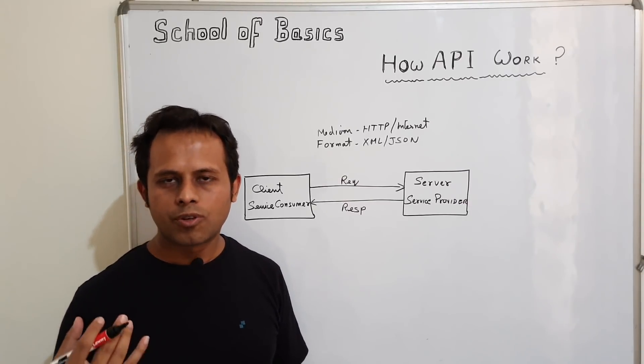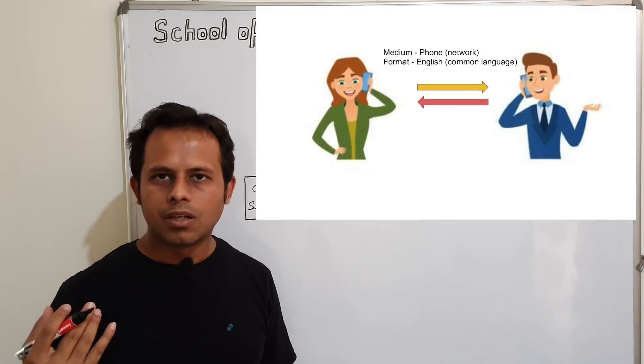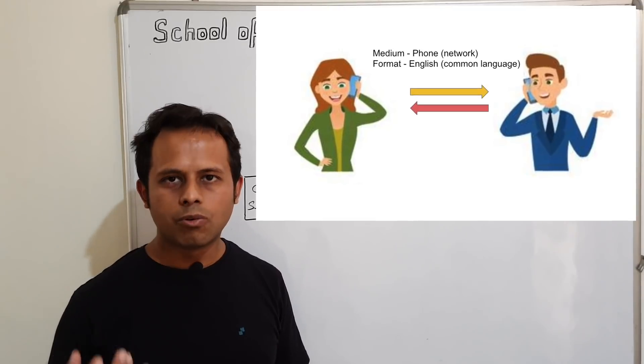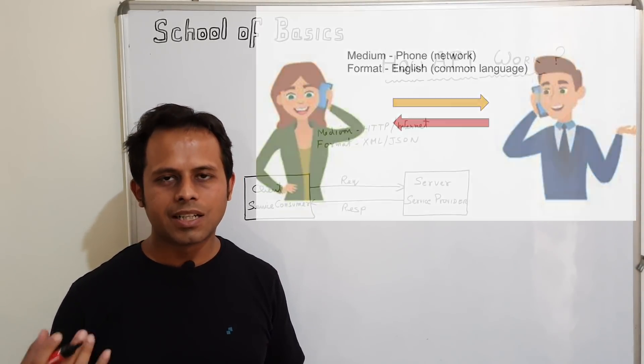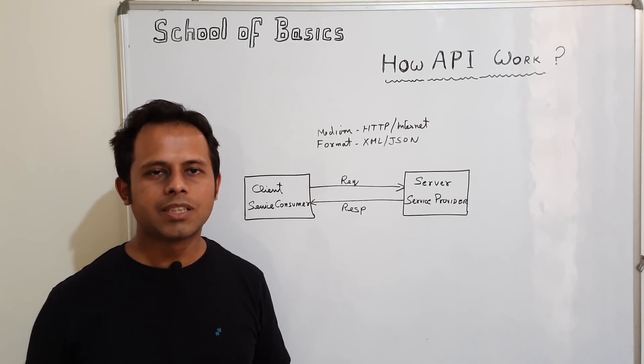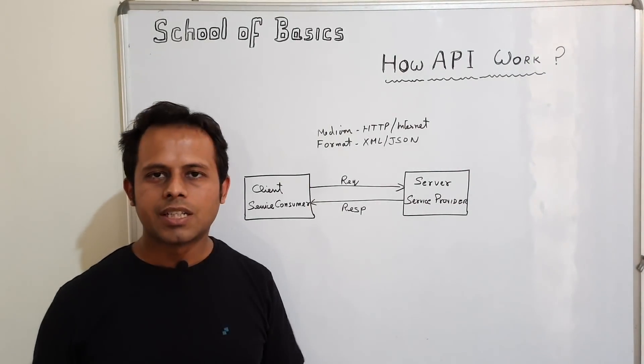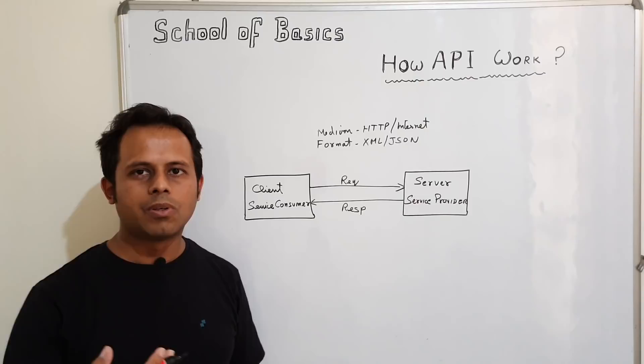So when you talk to your friend over a phone, the medium here is the phone and the format is the English language that both of you can understand. And that is how the communication takes place. And the same way the communication is enabled between a client and a server in APIs.